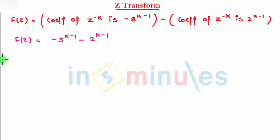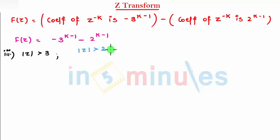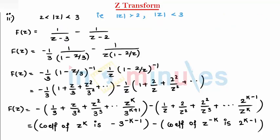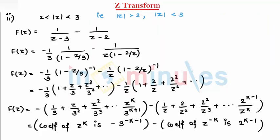So now, the third case — this was the second condition, so the third is: I put my third case, that is mod of z is greater than 3. So that means mod of z is also greater than 2 — both are greater. That means if I write f(z), f(z) is 1 upon z minus 3, minus 1 upon z minus 2.